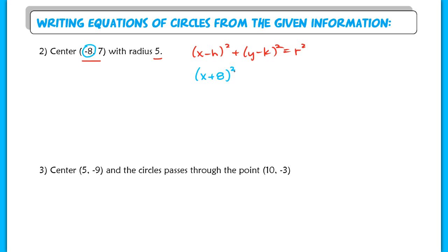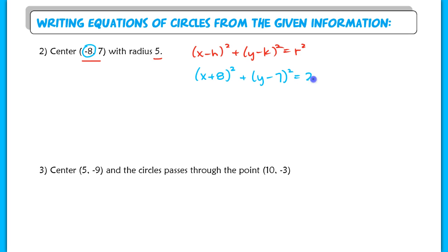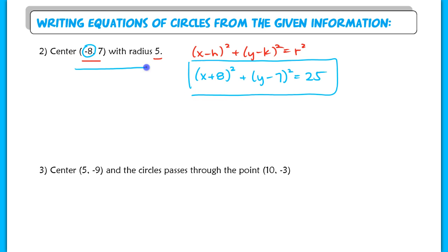It can get tricky with negative values. A center value like negative 8, when plugged into the equation, ends up as x plus 8. You have to be really careful with your signs. So you'd have (x plus 8) squared plus (y minus 7) squared.